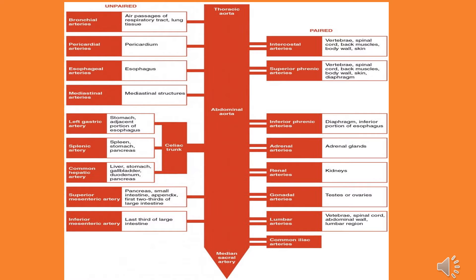Now let's revise the thoracic aorta and abdominal aorta layers. The thoracic aorta's paired branches include intercostal arteries supplying vertebrae, spinal cord, back muscles, body wall and skin, and the diaphragm. Its unpaired branches include the bronchial arteries supplying bronchi and lung tissue, pericardial arteries, esophageal arteries, and mediastinal branches. The rest continues as the abdominal aorta.